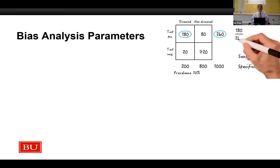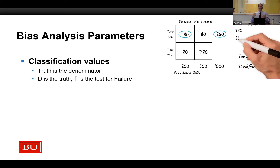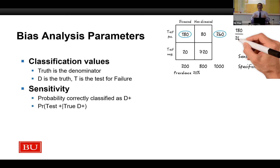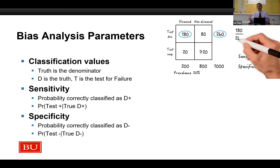I'm going to go through just a little bit of what you need to know for bias analysis. With bias analysis, the first thing we need is some assessment of the amount of bias — in this case, a misclassification problem. So we need classification values. If D (disease or outcome) is the truth and T is my test for treatment failure, then the first thing I need to know is sensitivity — the probability of being correctly classified as having the outcome, i.e., the probability that the test comes up positive when you are truly a treatment failure. And specificity is the opposite: the probability of being correctly classified as not having the outcome, i.e., testing negative when you truly do not have the outcome.